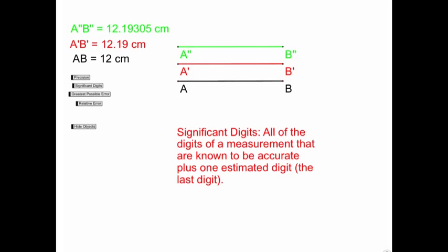The next term we need to be familiar with is significant digits, and that's all the digits of a measurement that are known to be accurate, plus one estimated digit.